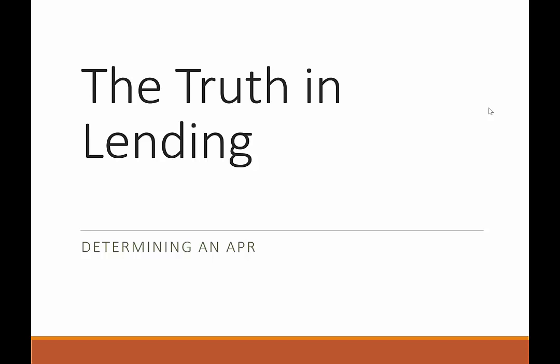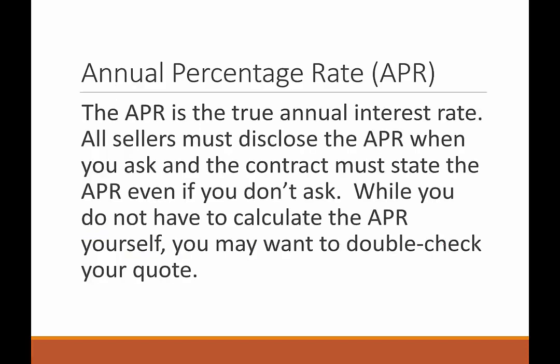Hello and welcome to HelpYourMath.com. In this video on truth in lending, we're going to look at determining an APR. An APR is an acronym for annual percentage rate. It is the true annual interest rate. All sellers must disclose the APR when you ask, and the contract must state the APR even if you don't ask. While you do not have to calculate the APR yourself, you might want to double check your quote anyway.